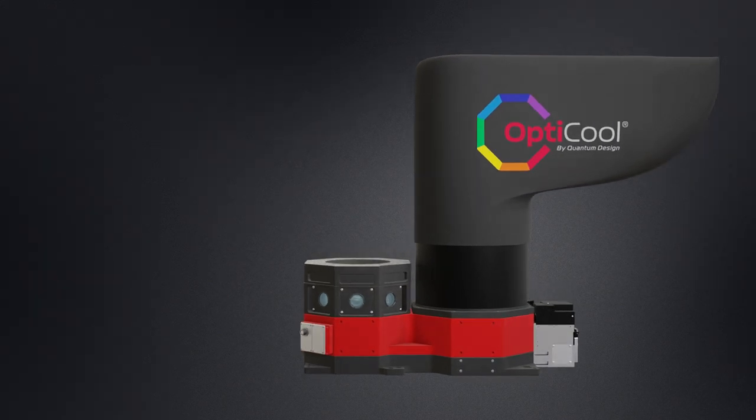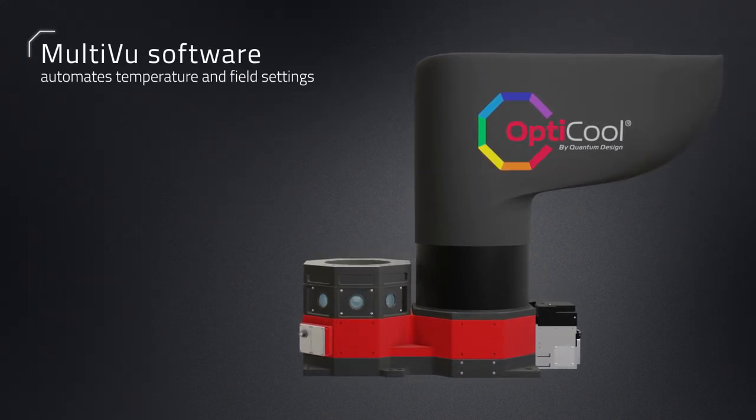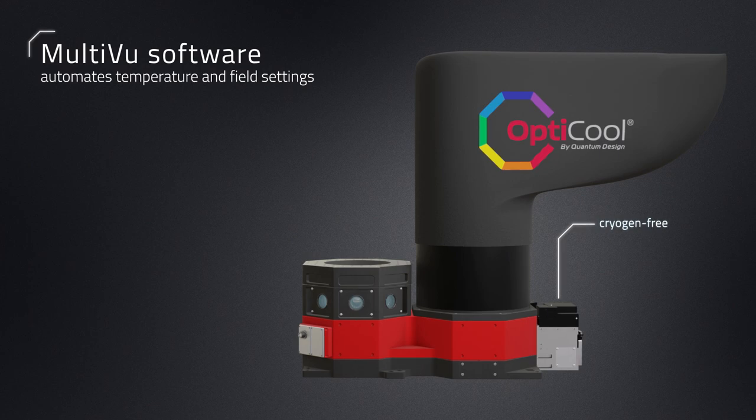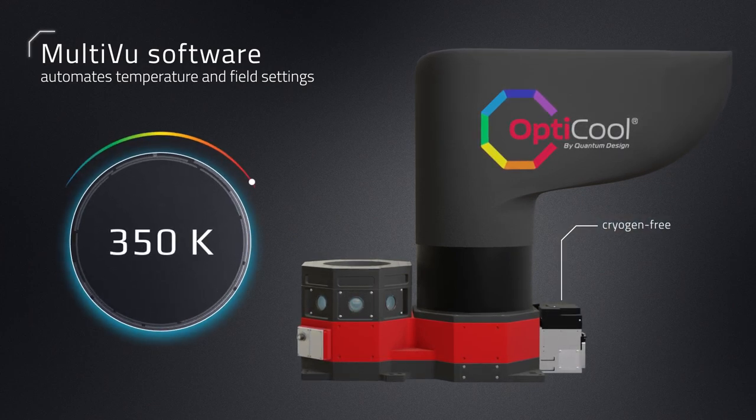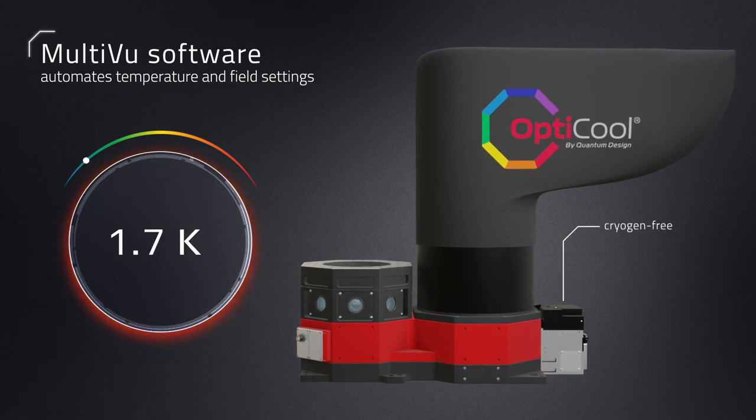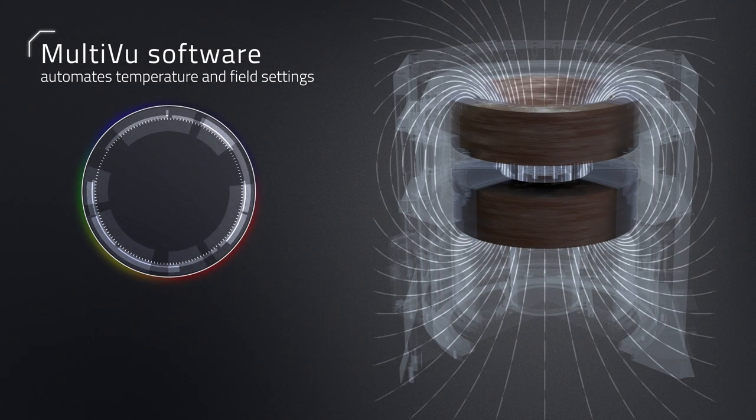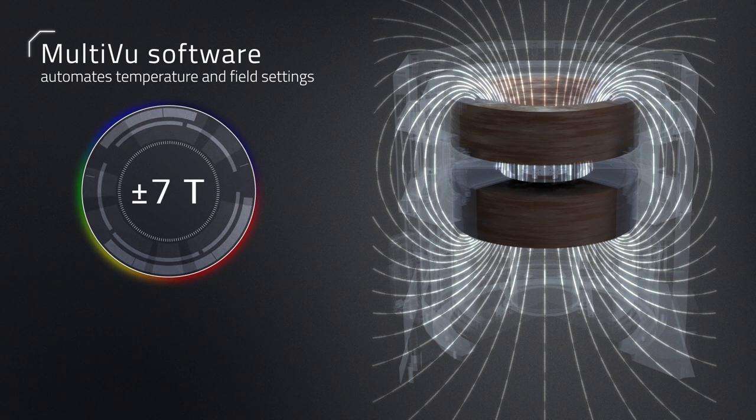Quantum Design's MultiView software automates temperature and field settings in this cryogen-free platform, allowing extremely stable control from the temperature range of 350 Kelvin down to 1.7 Kelvin and magnetic field range of ±7 Tesla.